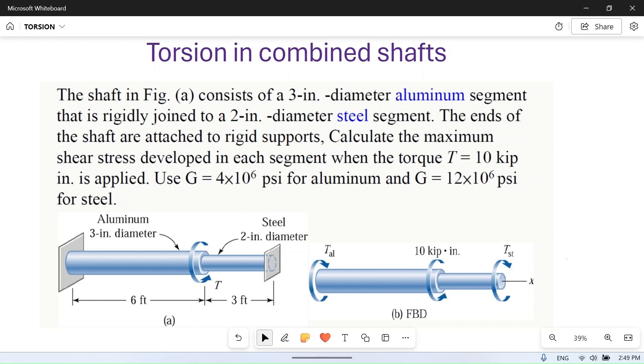The ends of the shaft are attached to fixed supports. When the two ends are fixed with rigid support and these segments are combined, the shafts are in parallel. In parallel shafts, angle of twist is the same, but torque may be